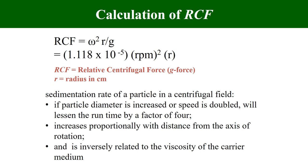Centrifugal force can be calculated using the formula G equals omega squared r. Another very important concept is relative centrifugal force (RCF), which relates centrifugal force to gravitational force: RCF = omega squared r divided by g, which simplifies to 1.118 × 10⁻⁵ × rpm² × rotor radius. The two factors that control sedimentation of any particle are the speed of the rotor and the radius of the rotor.